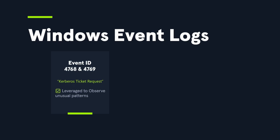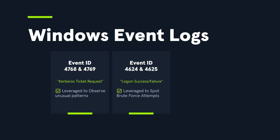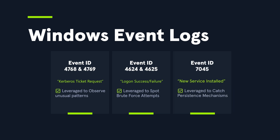Watch Event ID 4768 and 4769 — these are Kerberos ticket requests; watch for unusual patterns. Event ID 4624 and 4625 are for logon success and failure; keep an eye on these to spot brute force attempts. Event ID 7045 is for new service installed — this is to catch persistence mechanisms. Leveraging your EDR solutions allows you to detect and act on things at the host level so you can address issues right away before they become a huge problem.